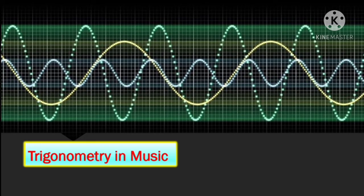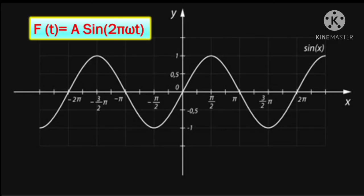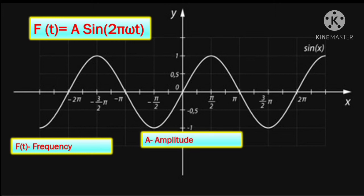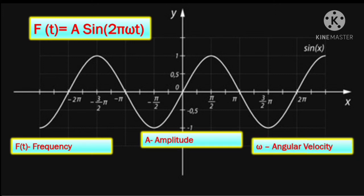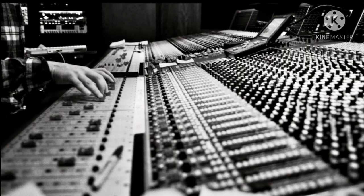The next application of trigonometry is in music. Music is nothing but sound waves, and a sound wave can be represented by the equation f(t) = a sin(2π ω t), where f(t) is the frequency of the wave, a is its amplitude, omega is the angular velocity, and t is the time. By manipulating the values of angular velocity, t, and a you can make the wave taller, wider, or narrower. Sound engineers use this property to create computer-generated sounds, and a lot of trigonometry is used to create digital audio.